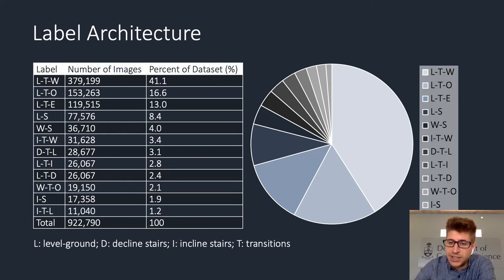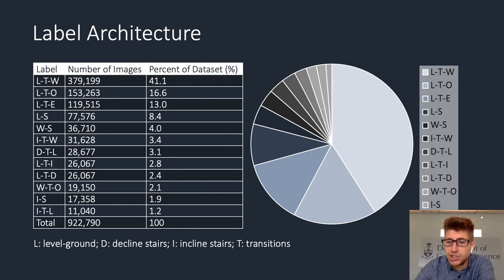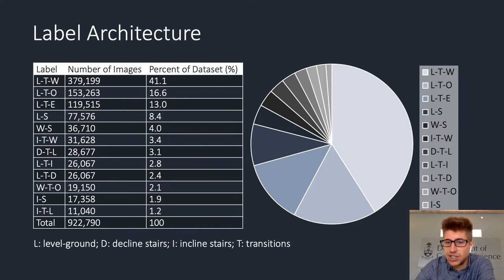Here is an overall breakdown of the environment classes in the ExoNet dataset. One thing to highlight is that the class distributions are not evenly balanced, as visually shown in the pie graph, which is an issue in machine learning. However, these imbalances are representative of the real world and the frequency with which we interact with each of these environments, so such imbalances should be somehow represented in your classification system.